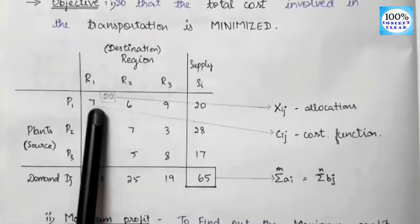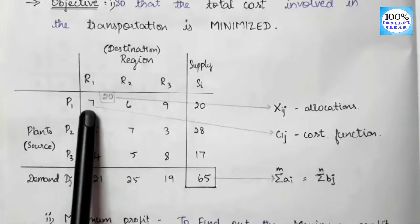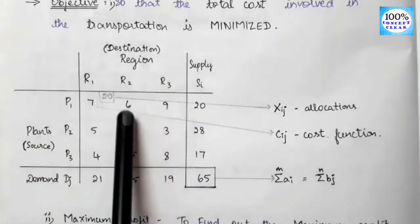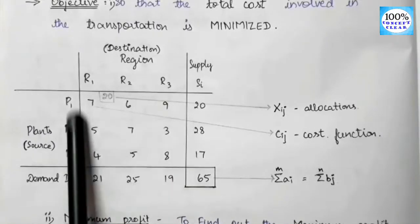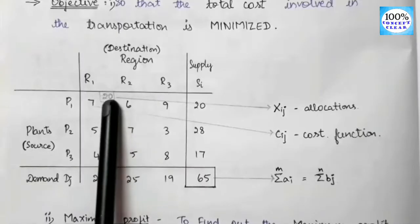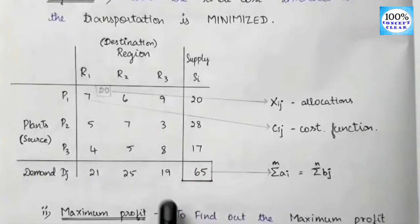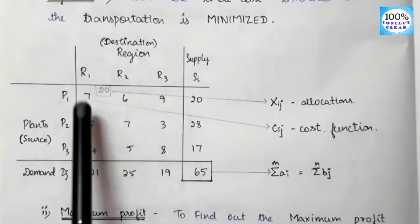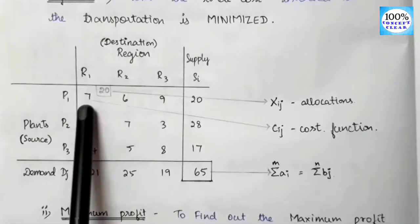The cost function Cij — for example, for P1 and R1 (Plant 1 to Region 1), the cost is 7 rupees. For Plant 1 to Region 2, the cost is 6 rupees. There are nine cost elements in total. We have to allocate demand and supply, and the allocation variable is called Xij. The transportation problem is mostly concerned with the cost function.